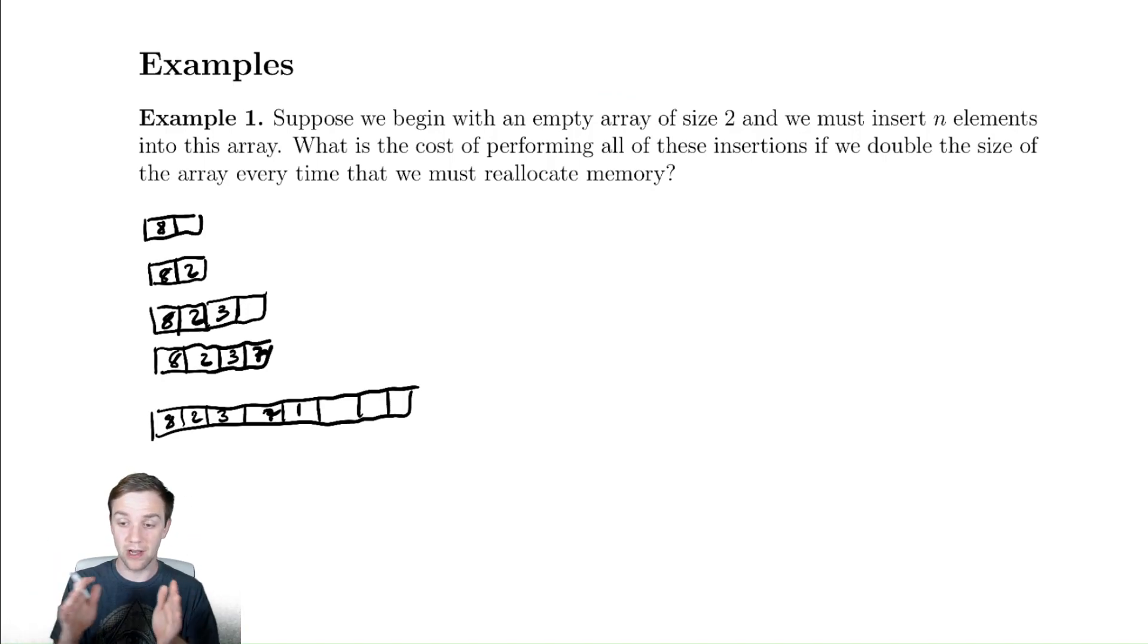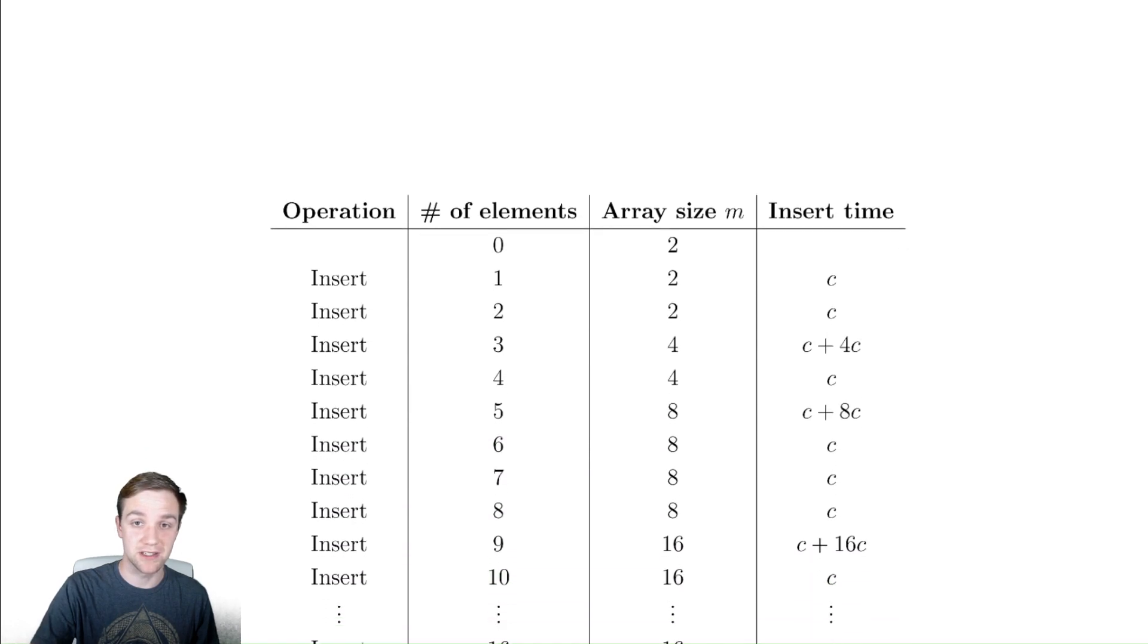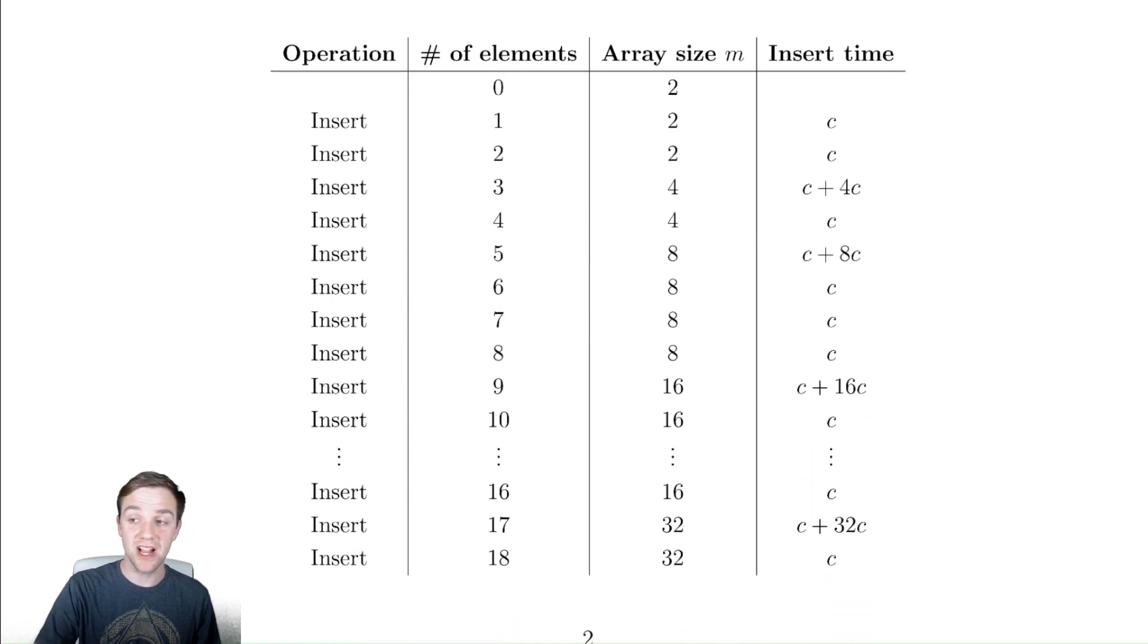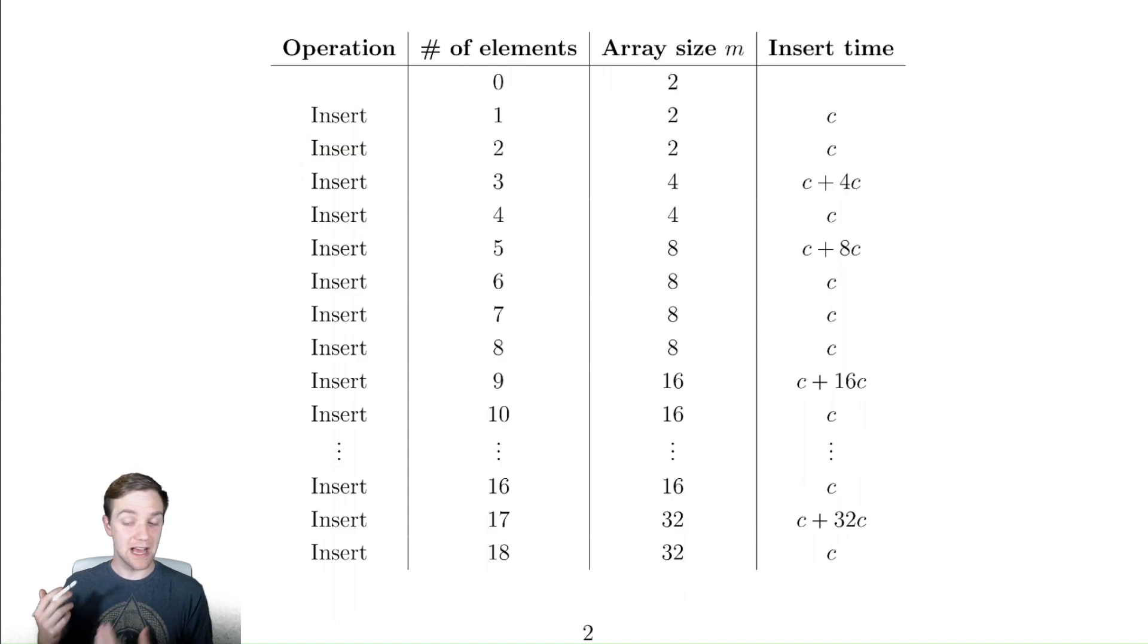So why don't we narrow down our investigation into something more directly focused on what we're interested in. So instead of doing this, what we're going to do is look at a table and keep track of the number of elements in the array and the size of that array. And when doing this we're going to use our scheme we described above where we doubled the size every single time. So we start with zero elements. We then continually insert. This entire column just increases by one the entire way down. Whenever we perform an insertion and make the number of elements greater than the array size, we must reallocate memory and create a new array that's twice the size.